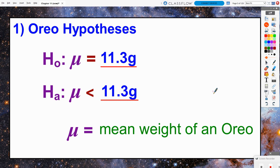In our Oreo example, the null hypothesis is that mu equals the claimed 11.3 grams, and what we want to prove that is true is that the true mean is now less than 11.3 grams, where mu is our mean weight of an Oreo.